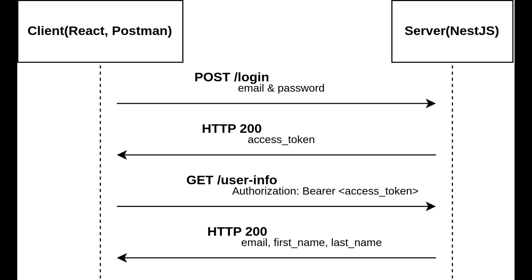We are going to implement a basic JWT authentication workflow in NestJS. The way this works is that first the client sends their email and password to our login endpoint. We validate if the user exists and if the password is correct. If everything is okay, we create an access token with the user information and send it back. Now the client can add that access token to the authorization header on requests to our protected endpoints. We validate the token on each request and if it is valid we give them access.